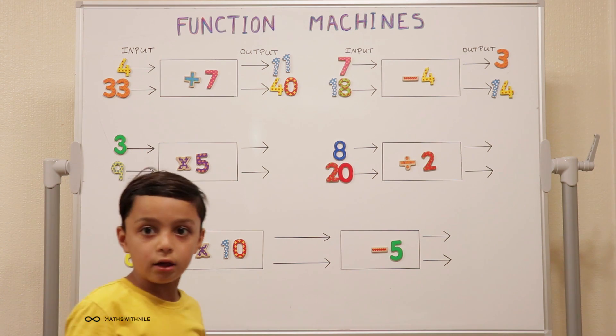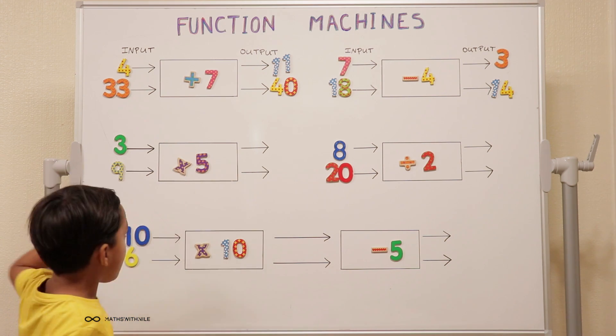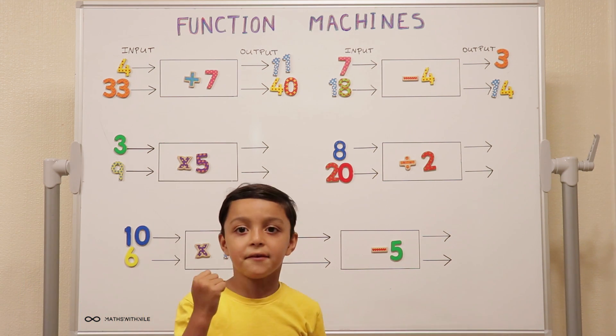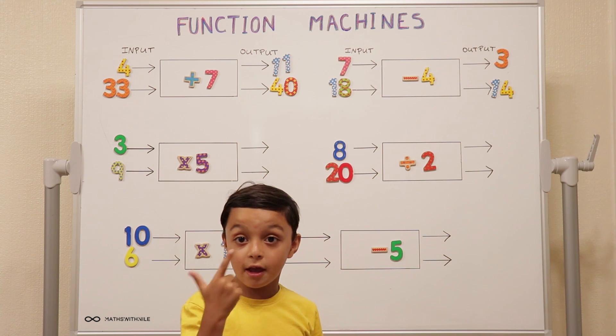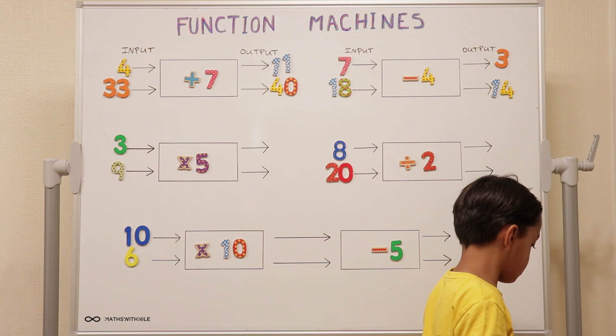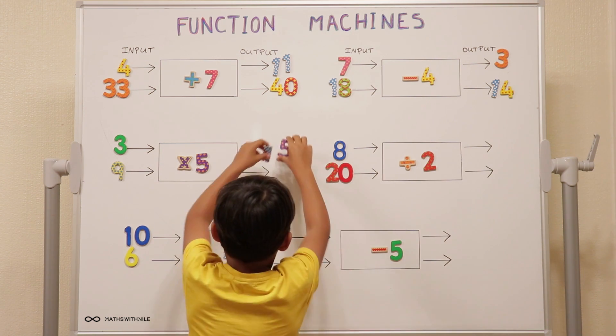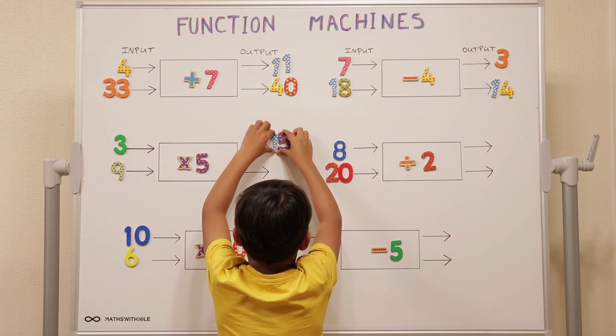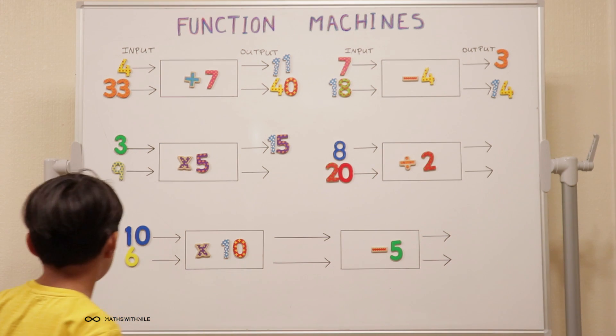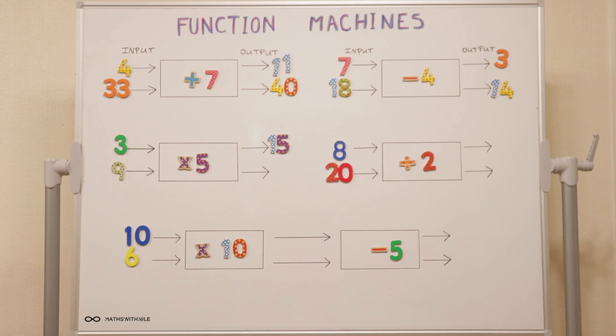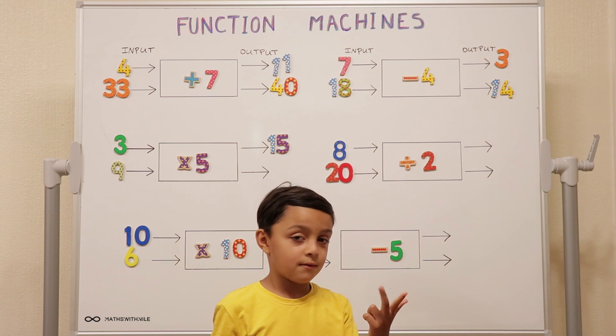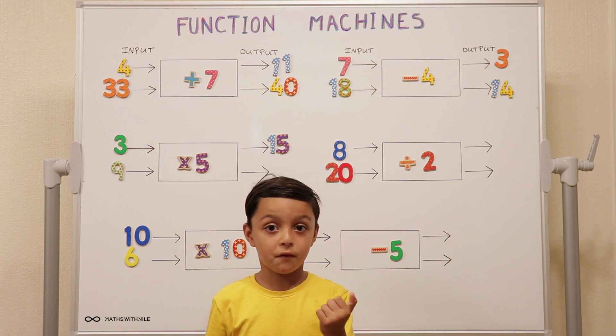Now that third function machine. It's three lots of five. So what's the rule? The rule is times five. You can just count in five for this. So five, ten, fifteen.